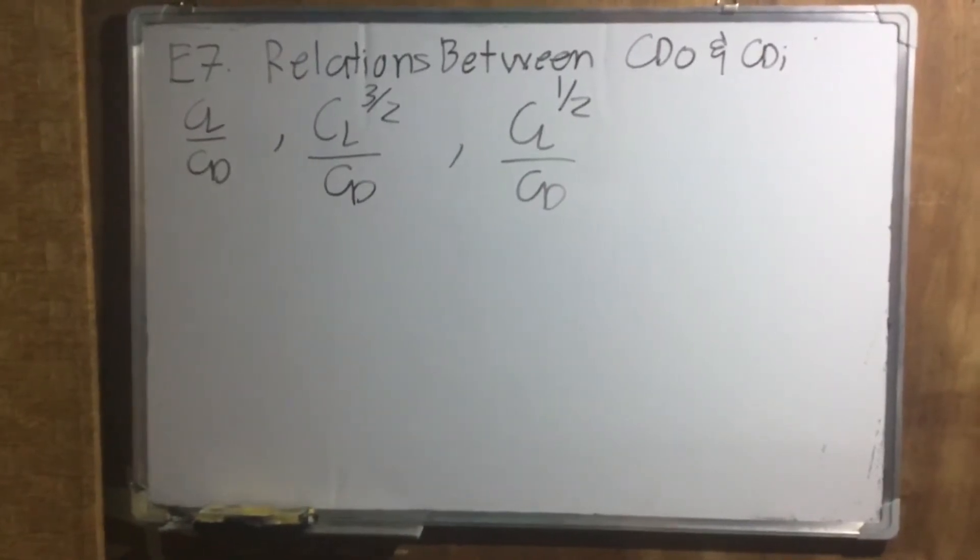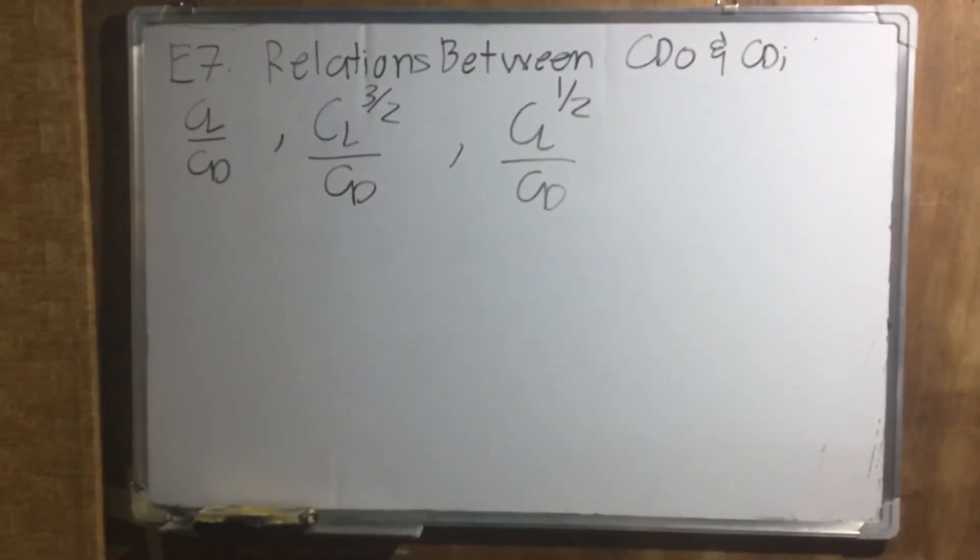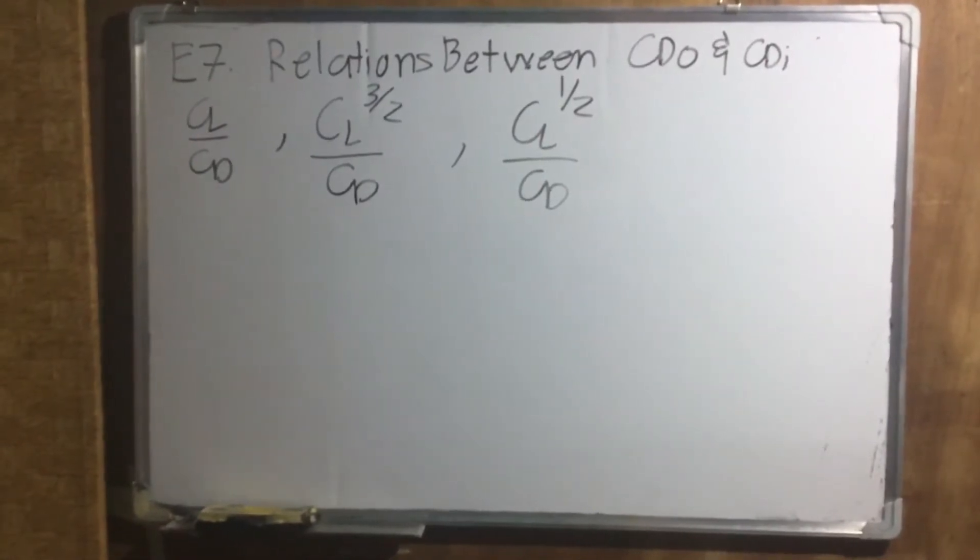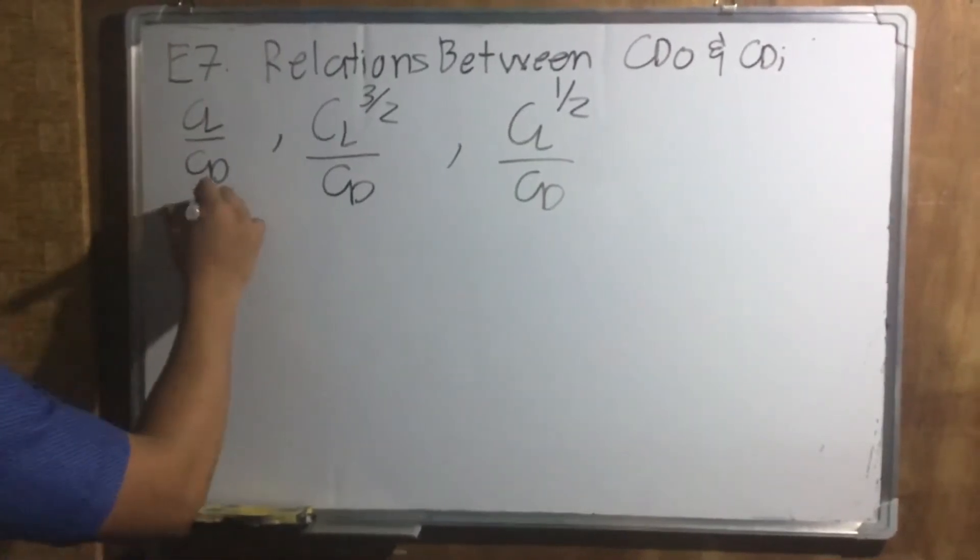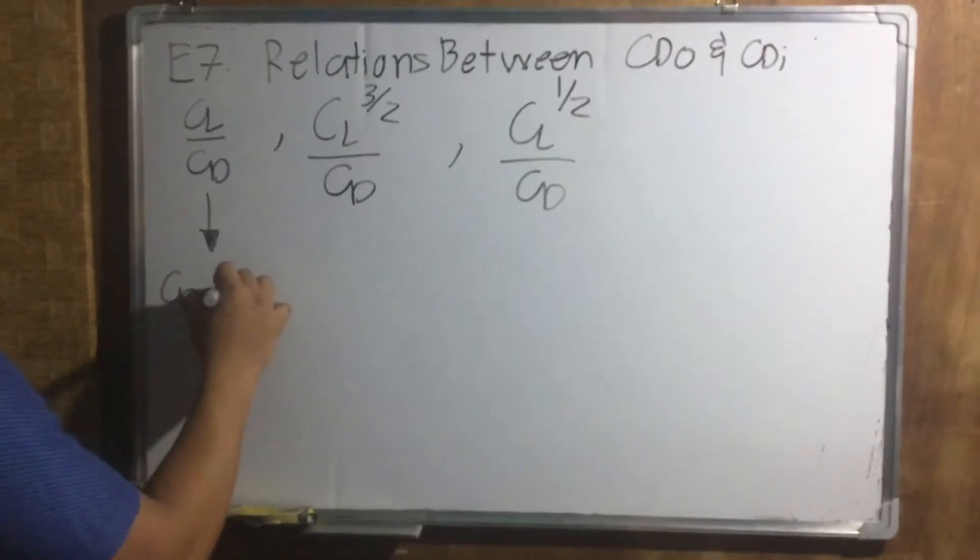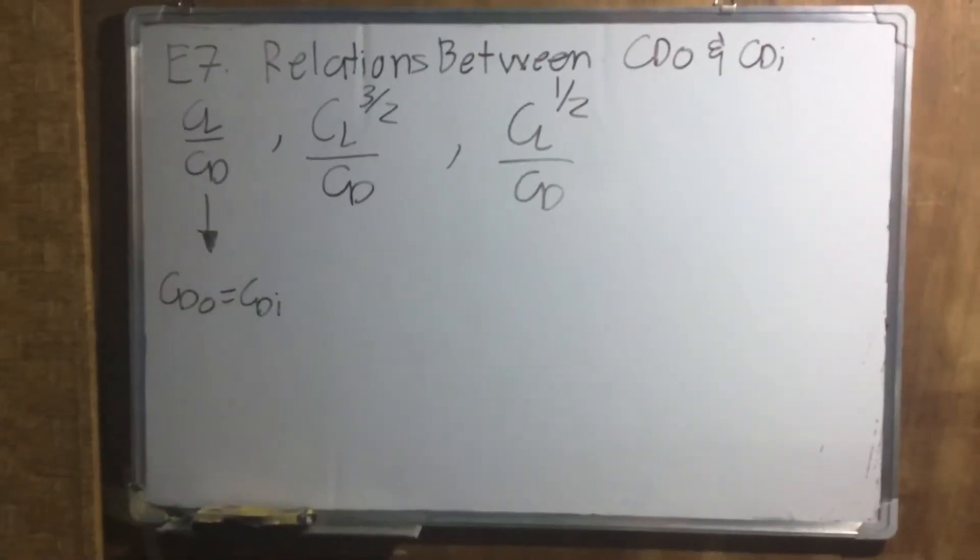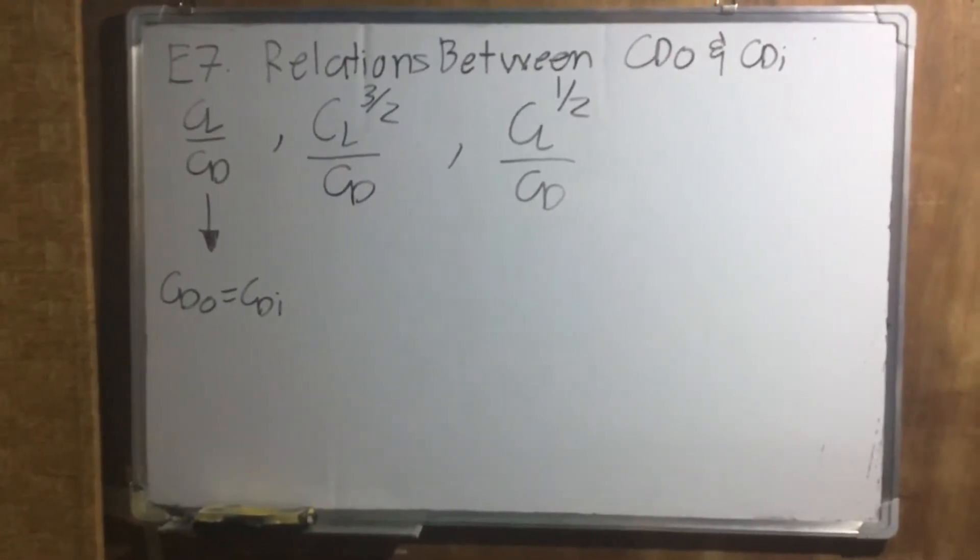We proved in our past equations that in order to get minimum thrust required, we must maximize the lift to drag ratio. When we have maximum lift to drag ratio, our CDO is equals to CDI.